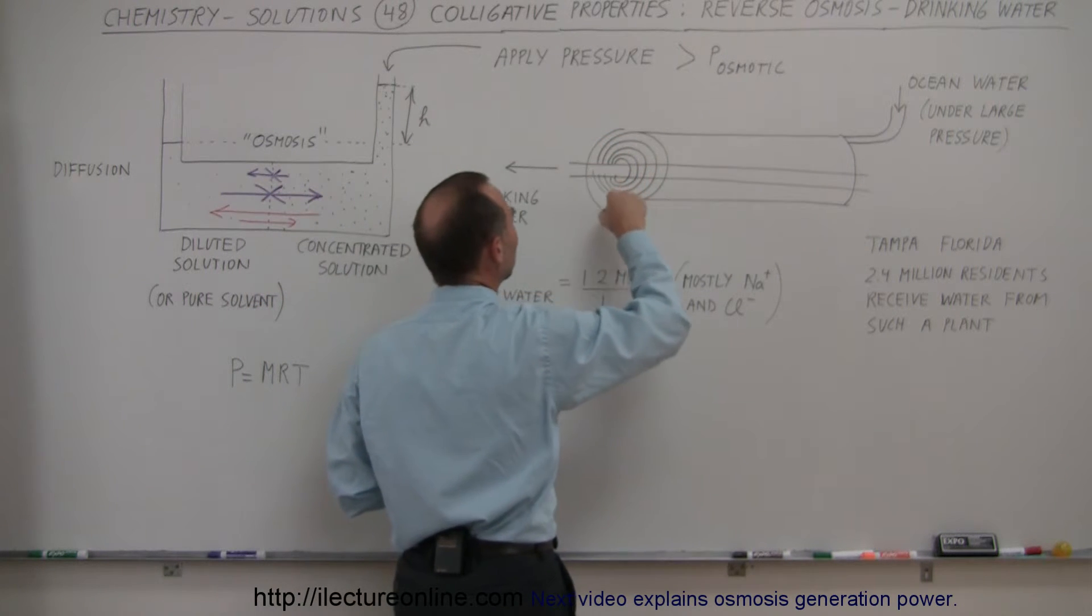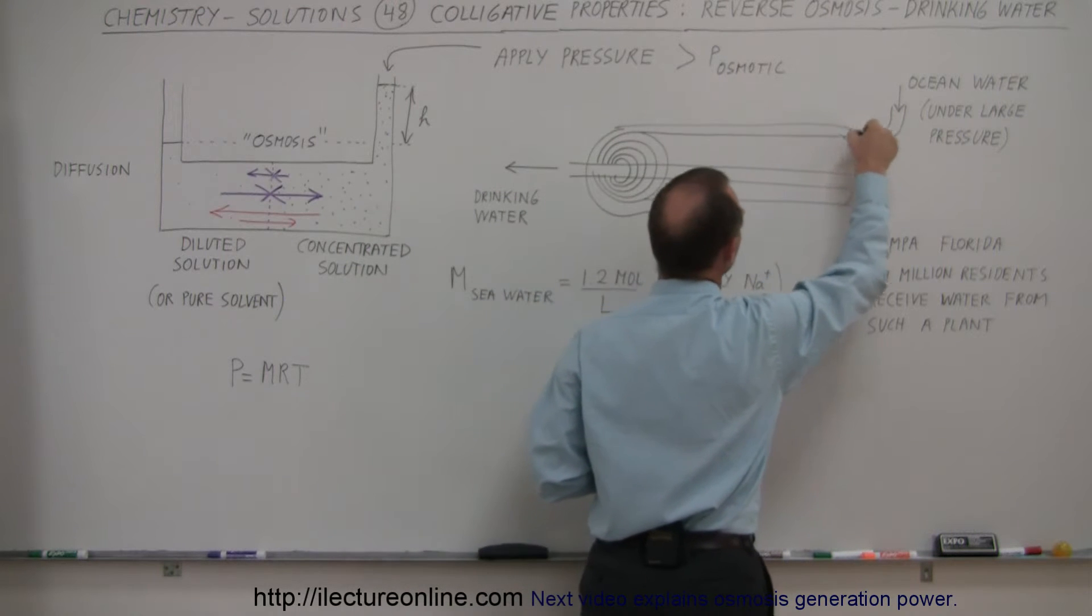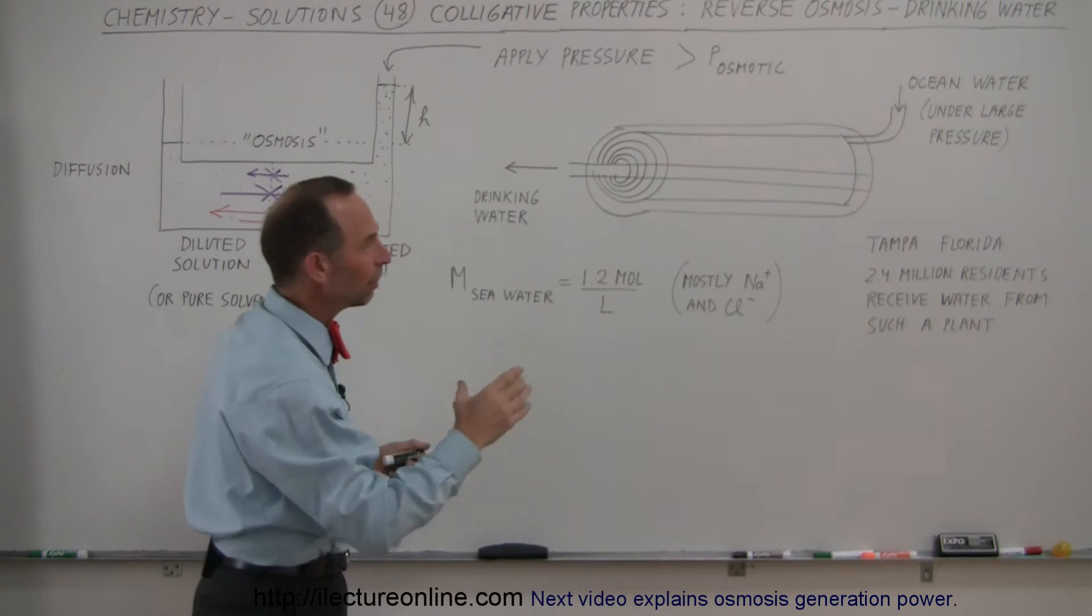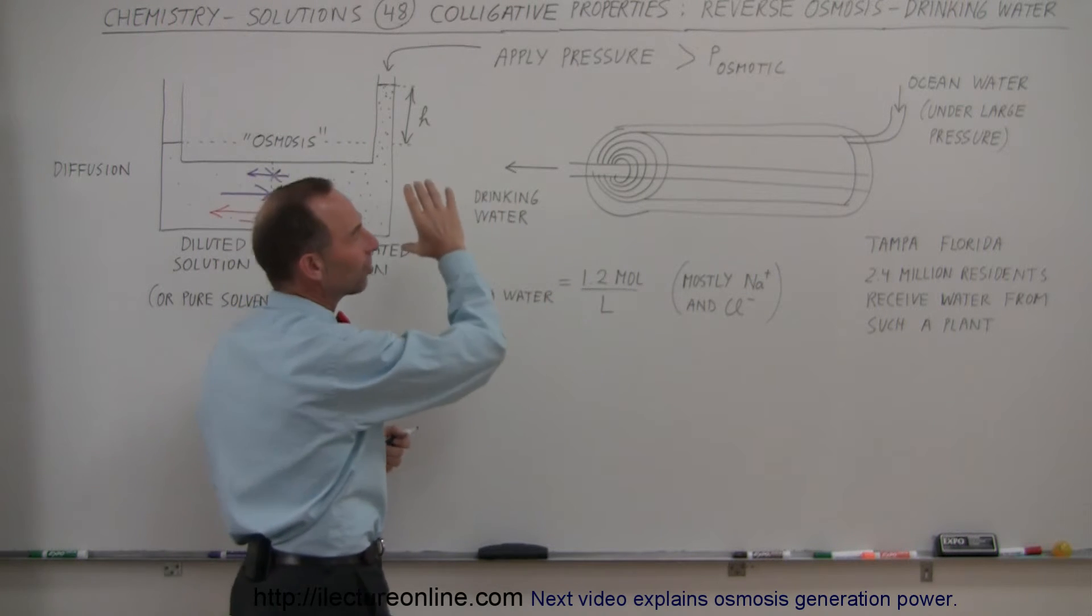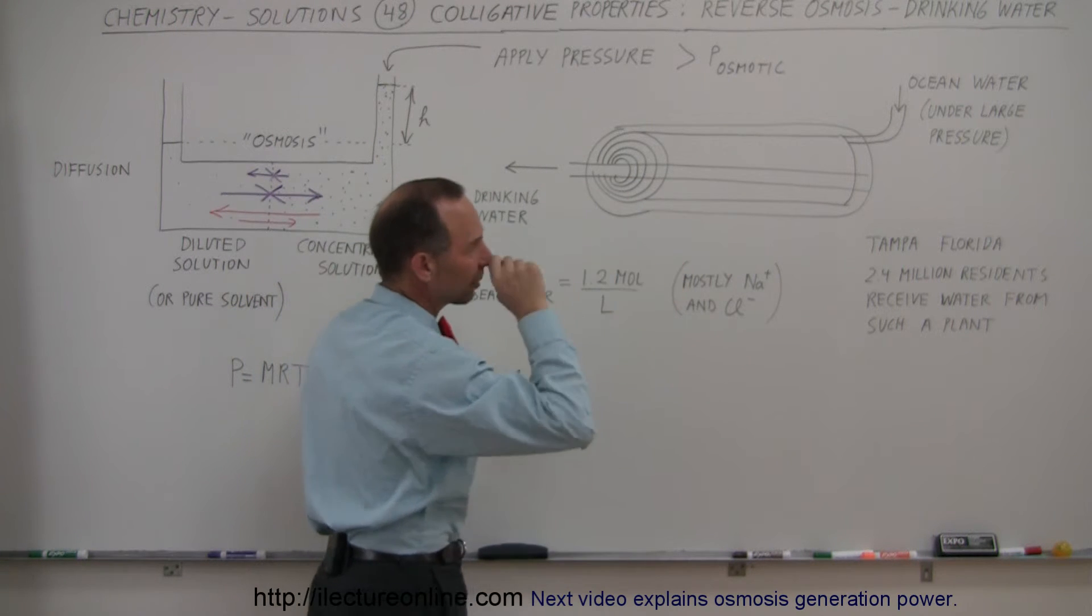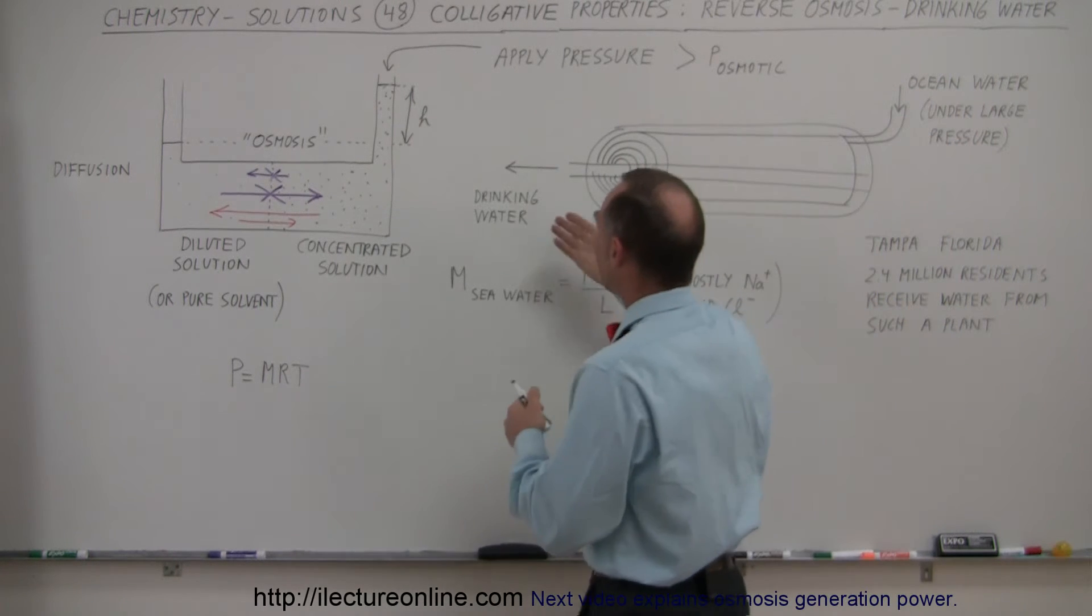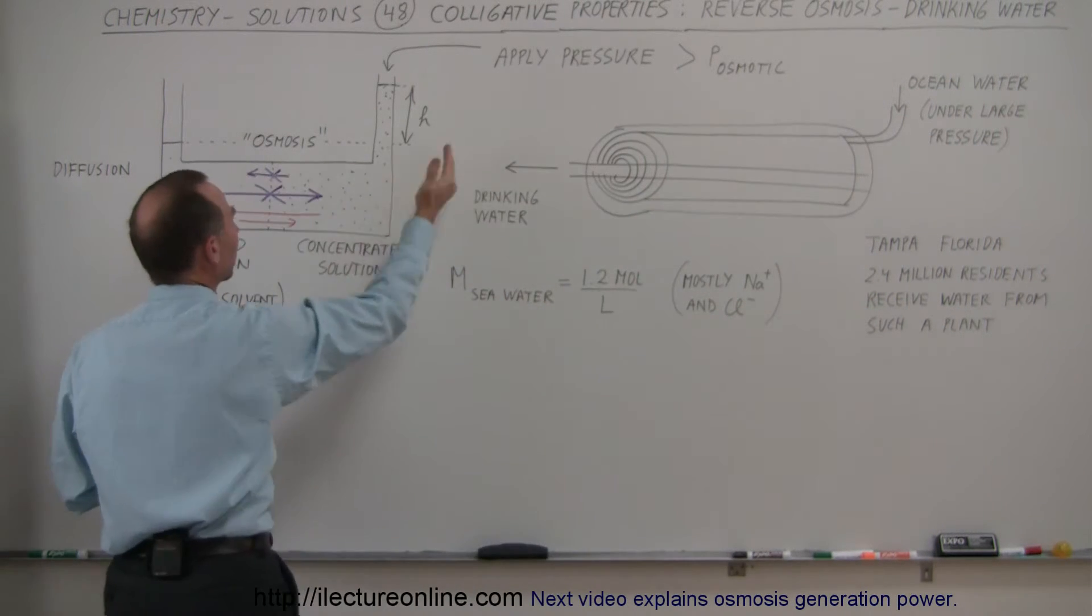The steel container ensures that no water can leak out. And so, we have these plants that have hundreds, sometimes thousands of these cylinders one after the other and we provide those cylinders then with ocean water under very large pressure, again, to reverse this osmosis process.